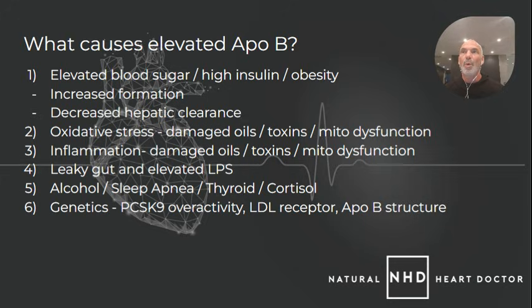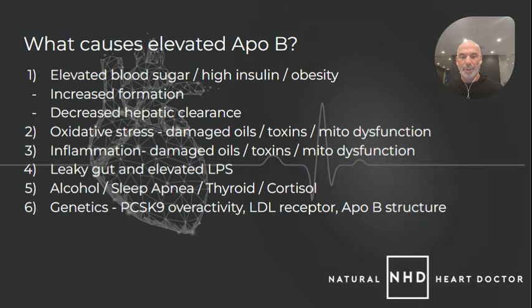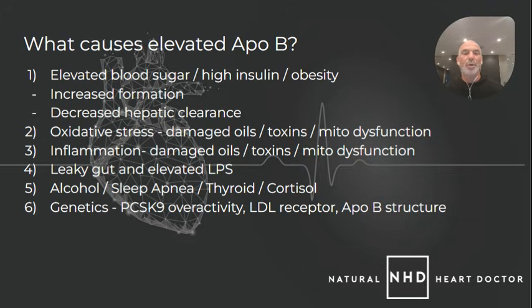When you have leaky gut, you have elevated lipopolysaccharides. Things get into the body that don't belong, and that interferes with ApoB clearance. Also, things like alcohol, sleep apnea, thyroid disorders, and cortisol elevation can all impact ApoB.